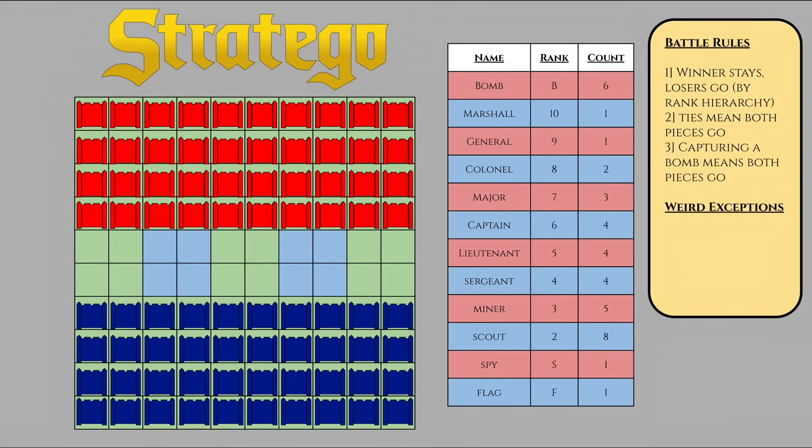There are two more special interactions. First, a miner, or three-piece, can defuse bombs without being eliminated. Second, if the offensive player's spy attacks the defensive player's marshal, or ten, then the marshal is removed from the board while the spy is not. However, if the roles are reversed, and if any piece attacks the spy, then the spy is removed.